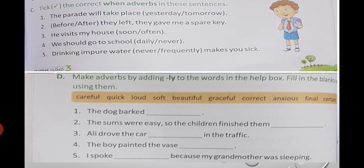Next is part D. Make adverbs by adding -LY. For example: The dog barked loudly. The sums were easy, so the children finished them quickly — add -LY to 'quick.' Ali drove the car carefully in the traffic.